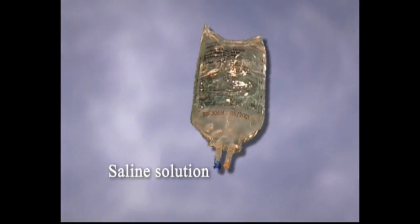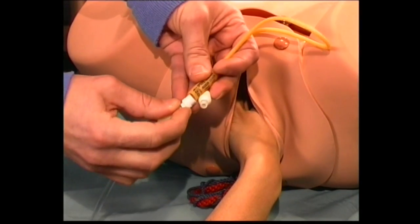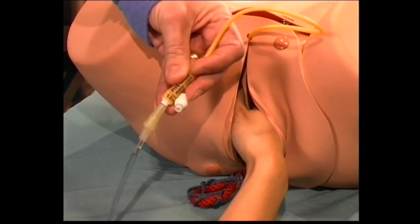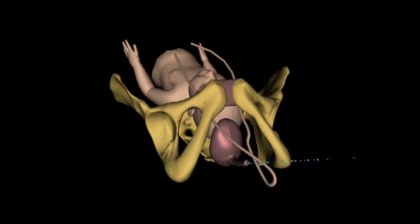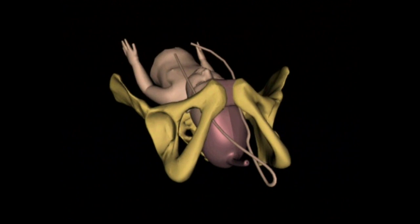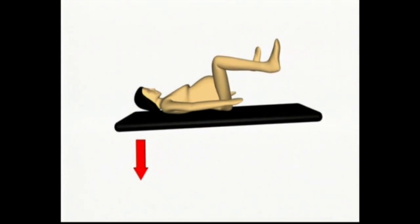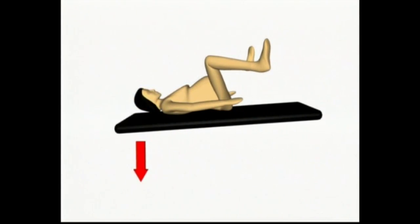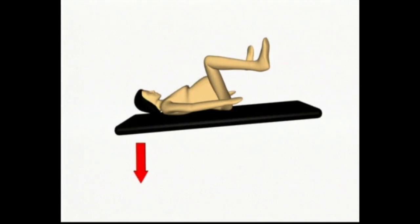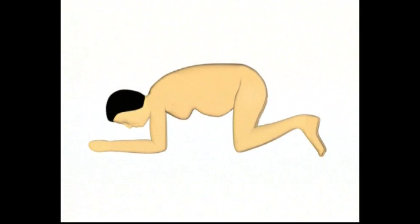The insertion of the catheter prepares the patient for caesarean section and also, theoretically, as the bladder fills, it may displace the fetal head upwards and so reduce cord compression. The position of the patient should also be altered. This can be done in two ways: tilting the head of the bed downwards, or turning the patient over so she rests on her elbows and knees.